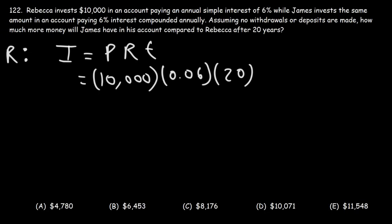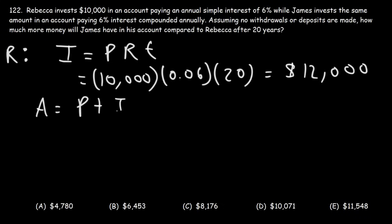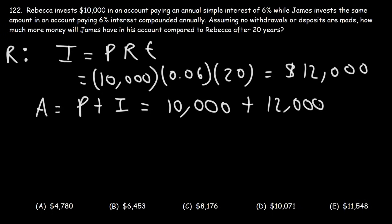Every year she's going to receive 6% of $10,000, which is $600. So she's going to receive $600 each year for 20 years. Thus, the total amount of interest payments she's going to receive is $12,000. The amount of money in her account is going to be the principal plus the interest received — $10,000 plus $12,000 — so at the end of 20 years, Rebecca's going to have a total of $22,000 in her account.